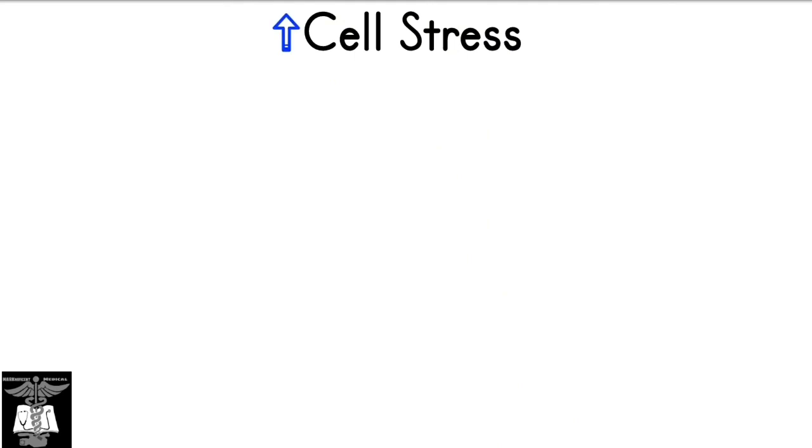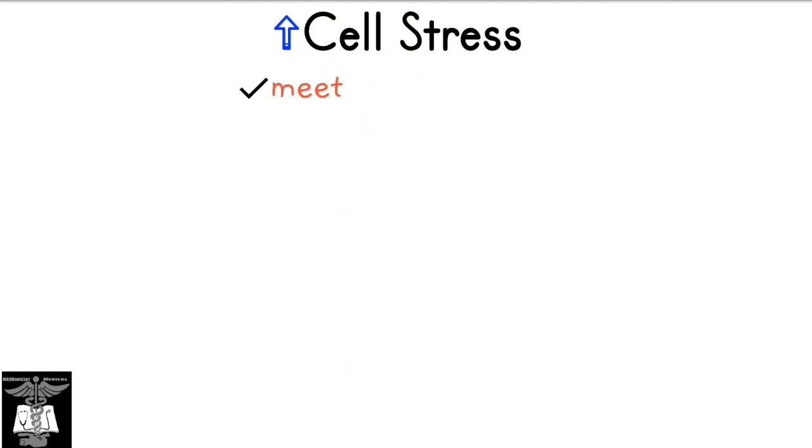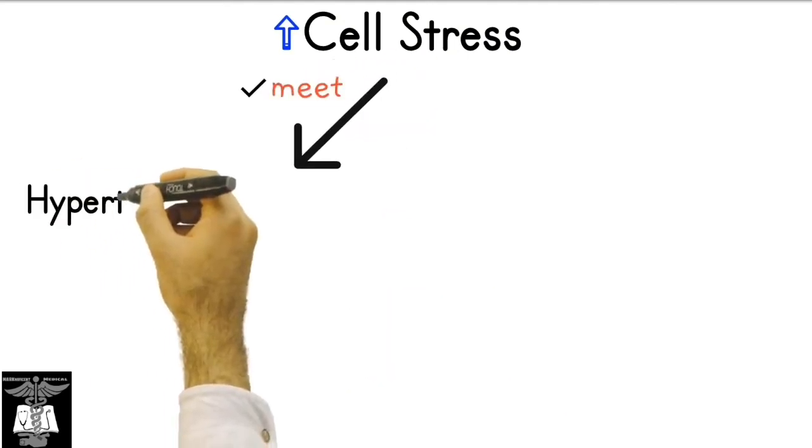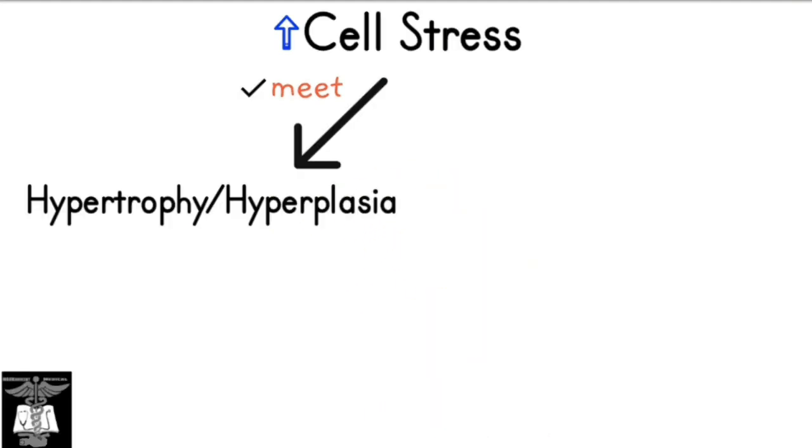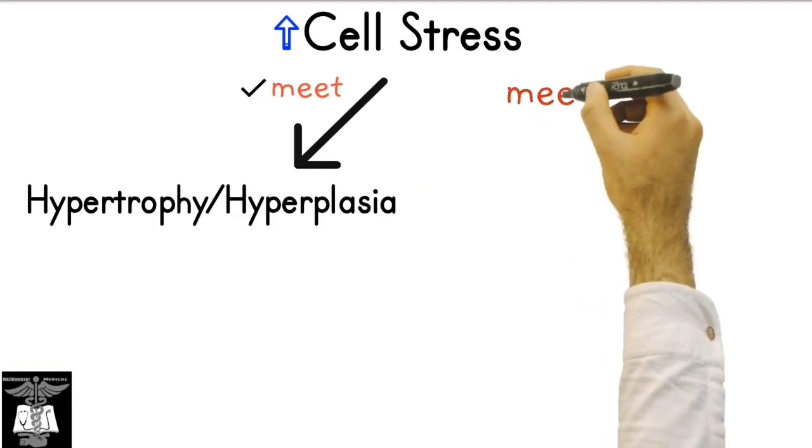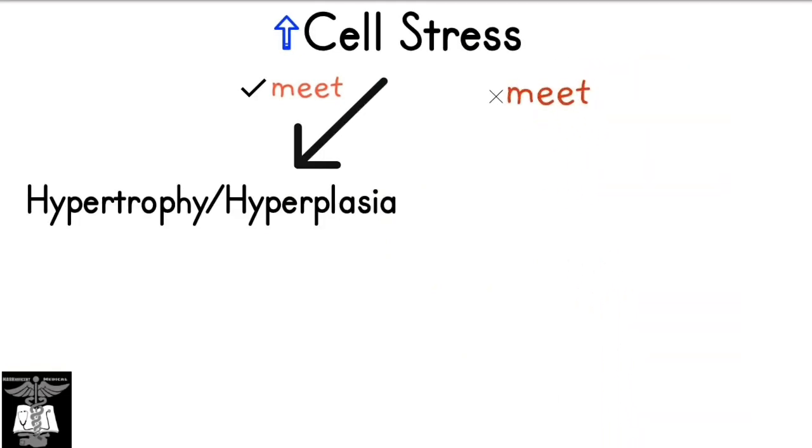When there's an increase in cell stress, cells can often meet this new level of demand by going through hypertrophy or hyperplasia. However, if the cell cannot meet the new level of demand, it will undergo cell injury.